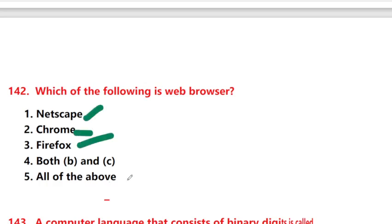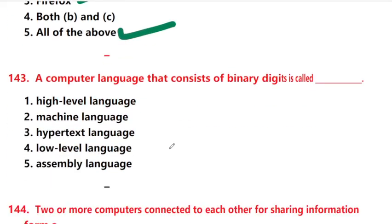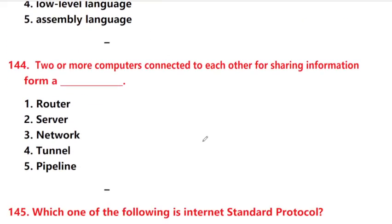Options: Netscape, Chrome, Firefox, all of the above. Answer is option 5: all of the above. A computer language that consists of binary digits is called — option 2: machine language.